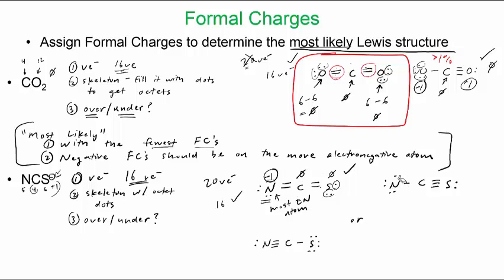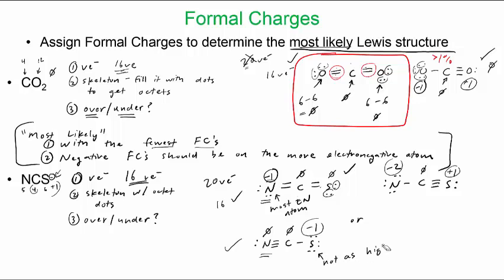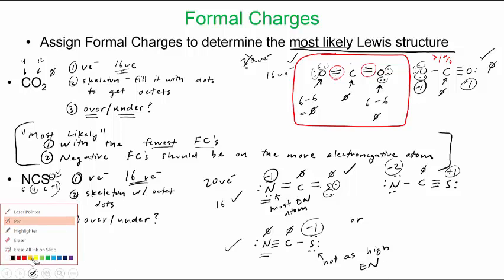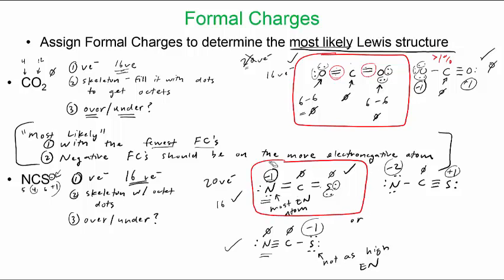For the triple bond on nitrogen structure: nitrogen is five minus two minus six equals minus two; carbon is zero; sulfur is six minus two minus three equals plus one. Too many formal charges — worse than the first. For the triple bond on sulfur structure: nitrogen is five minus two minus three equals zero; carbon is zero; sulfur is six minus two minus four equals minus one. This is acceptable, but the negative charge is on sulfur, which is less electronegative than nitrogen. Therefore, the most likely Lewis structure is the double-bond structure with the negative formal charge on nitrogen.